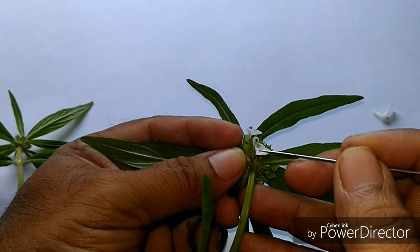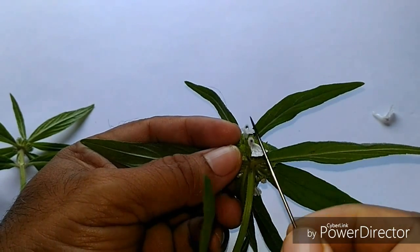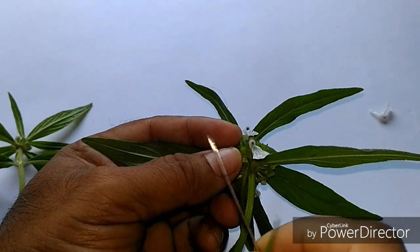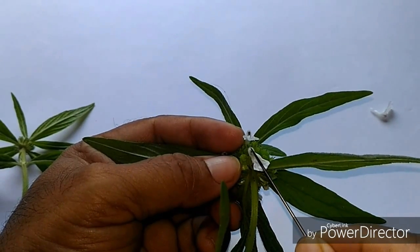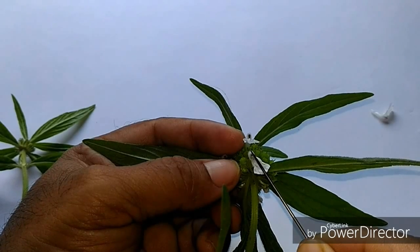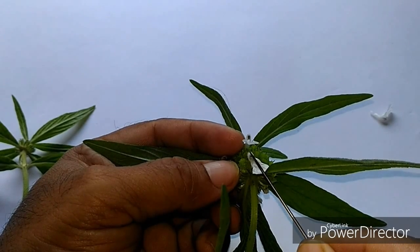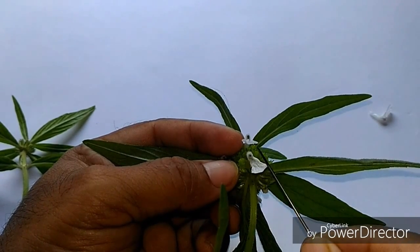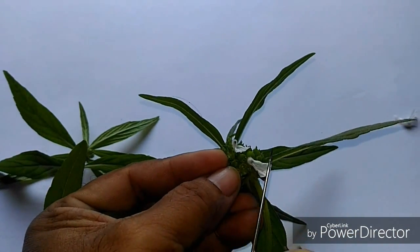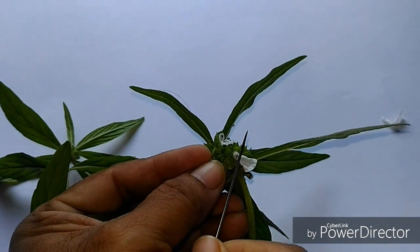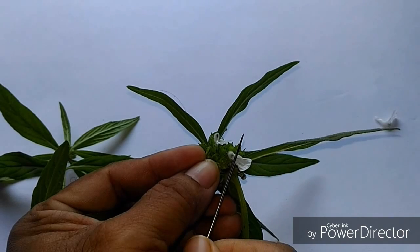And the flower is zygomorphic. Why is it zygomorphic? Because if you cut in this direction, you will get a bilateral symmetry. But if the cutting angle is like this, you won't be able to get bilateral symmetry.